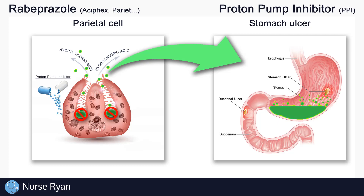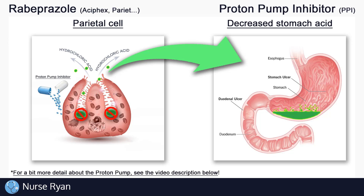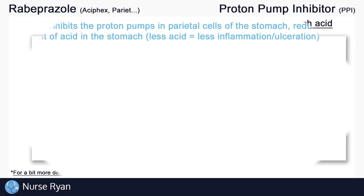This is where proton pump inhibitors come in. As the name suggests, proton pump inhibitors work by inhibiting or blocking the proton pumps in the parietal cells of the stomach, essentially reducing the amount of acid in the stomach. This reduced stomach acid can help to treat GERD, peptic ulcers, and more.